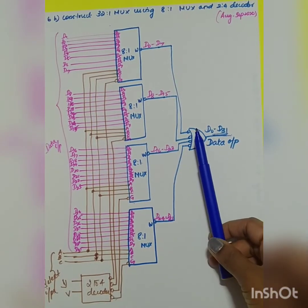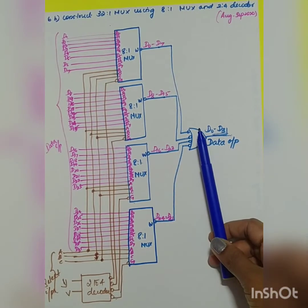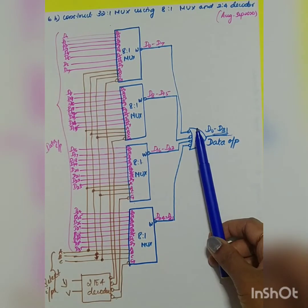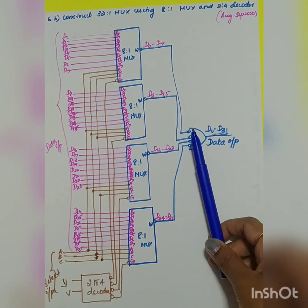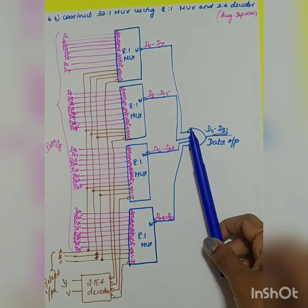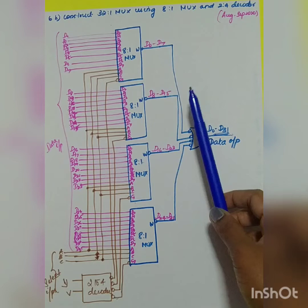The next question is: construct a 32-to-1 MUX using 8-to-1 MUX and 2-to-4 decoder. The first condition here is to find out how you can construct your 32-to-1 MUX. If you want to construct this 32-to-1 MUX, you have to have 5 select lines.